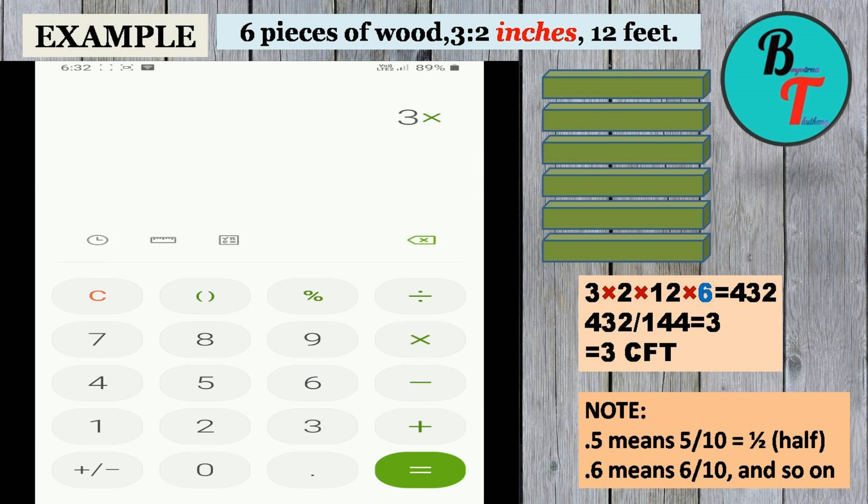Here 3 into 2 into 12 into 6 equals 432. 432 divided by 144 equals 3.